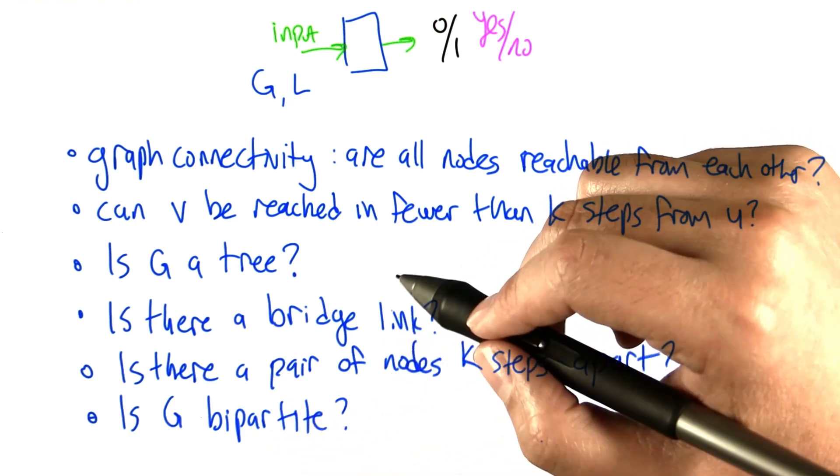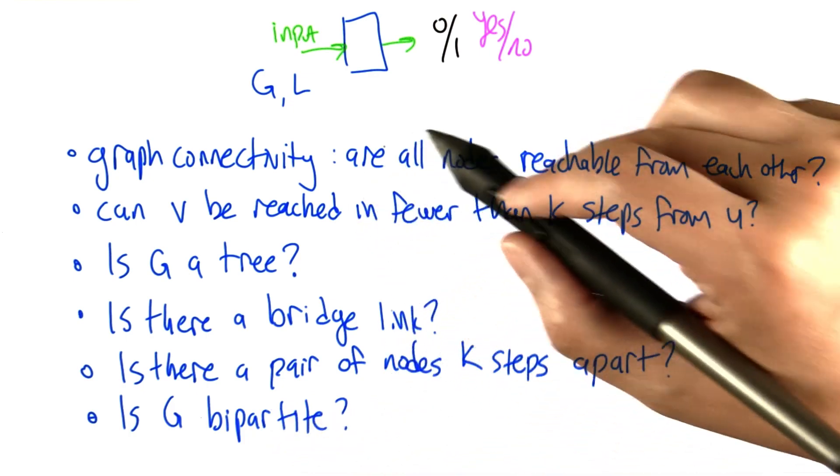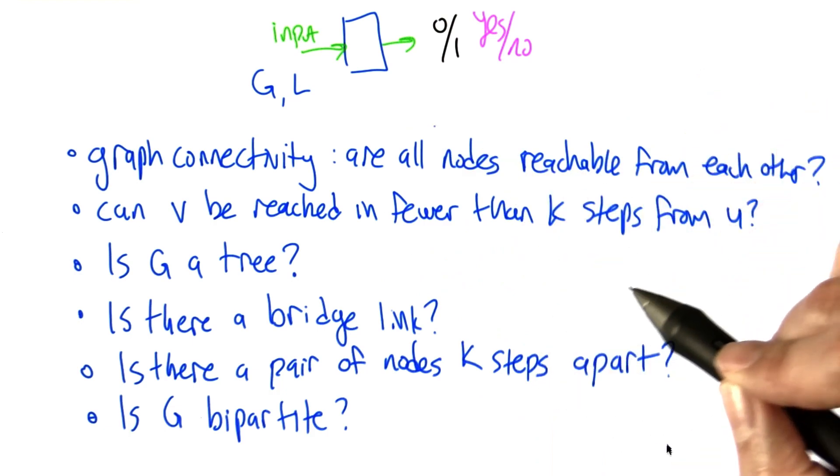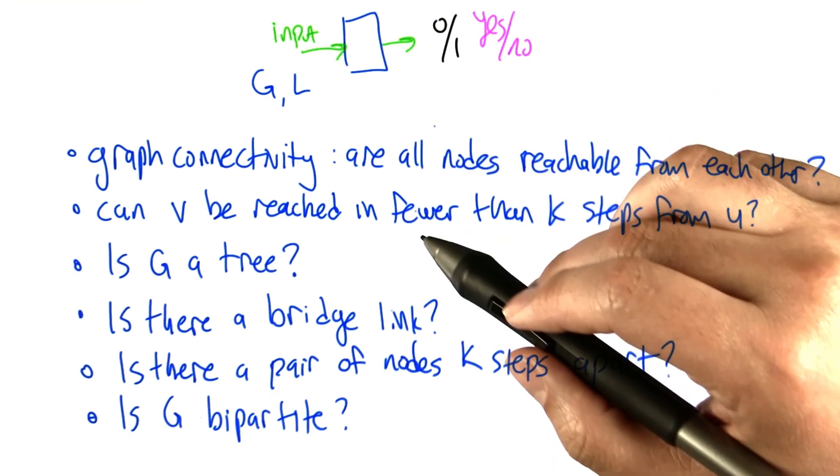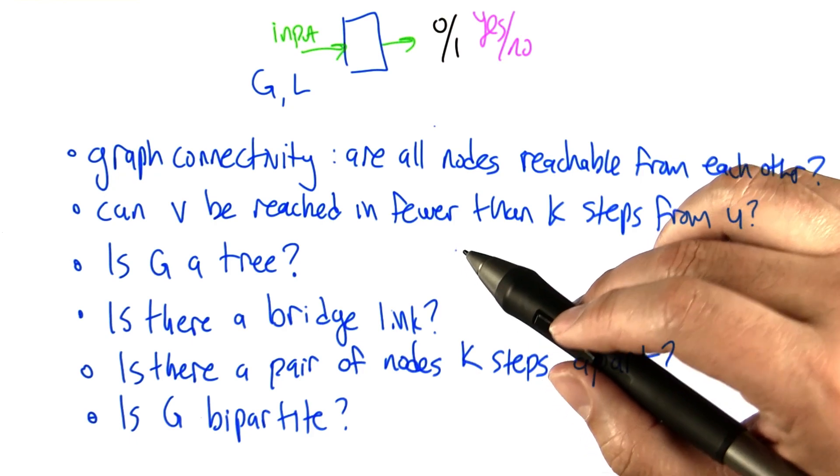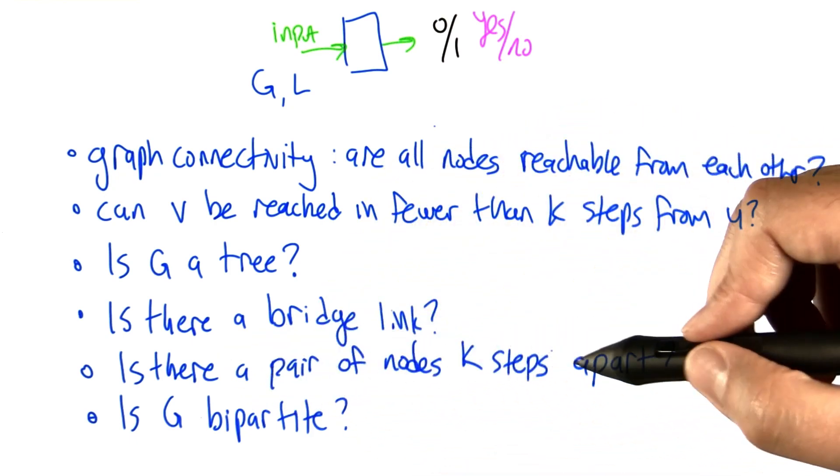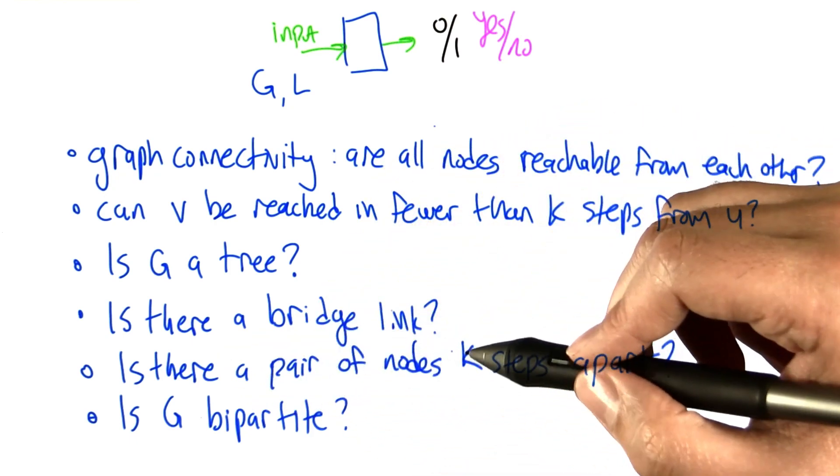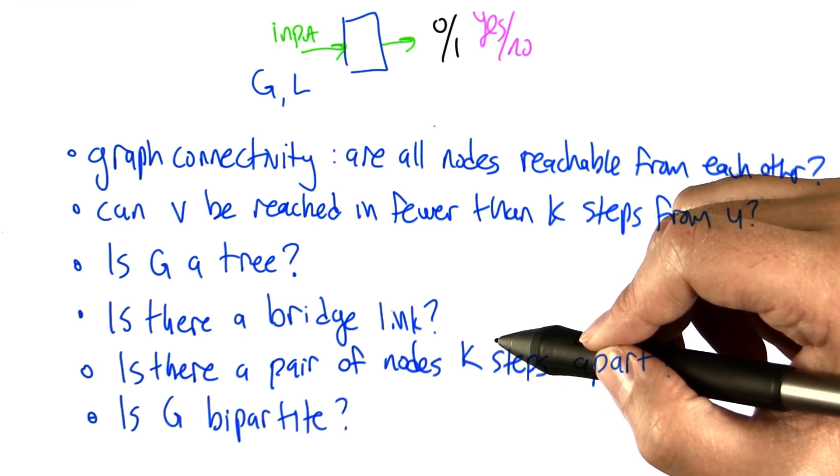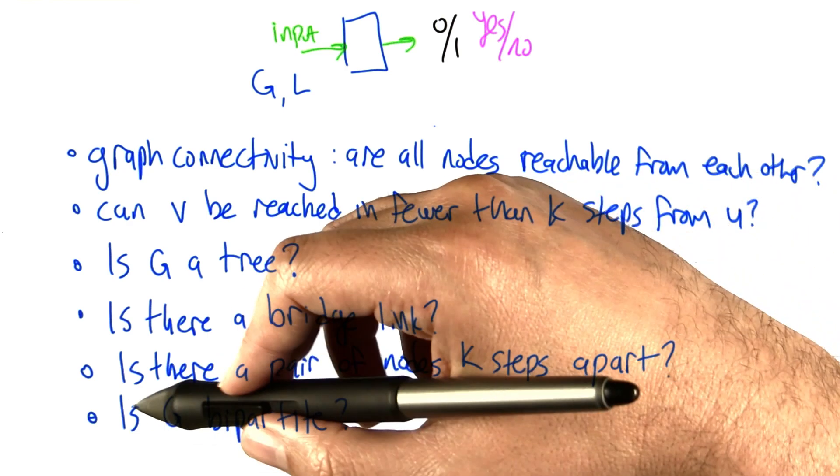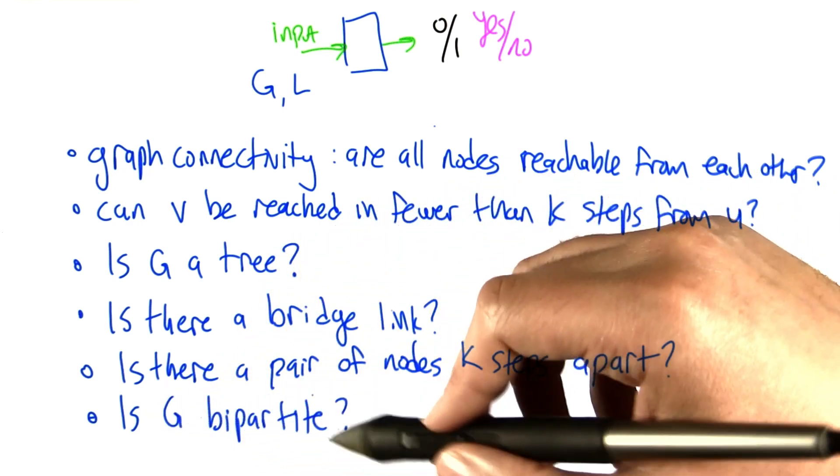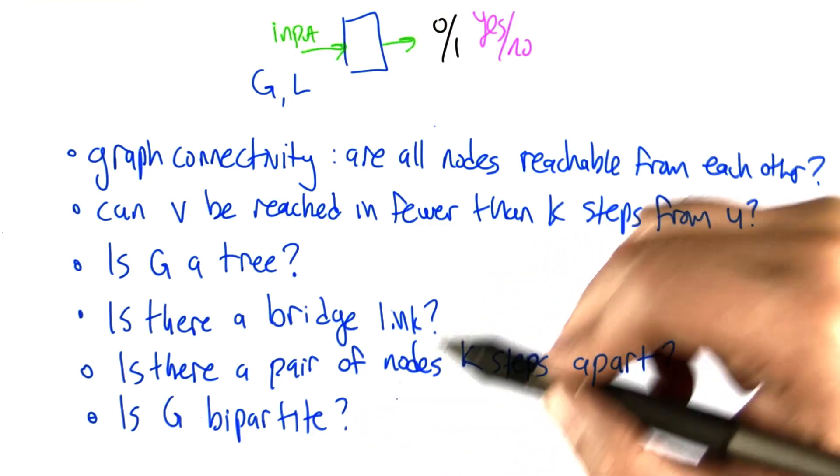Now, you could argue that these problems are all a little bit silly. We don't often want to know just one bit of answer. We want to know something like, is there a pair of nodes k steps apart, but find me a pair of nodes k steps apart. Or, not just is the graph bipartite, but separate it into the two pieces, and show me what those pieces are.